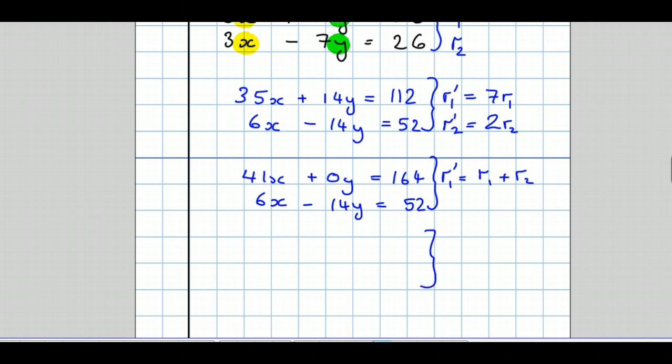Now my next line of working is to find out the value of one of the variables, in this case x. So my new row 1 is going to be the old row 1 divided by 41, and we get x plus 0y divided by 41 is 0y, equals how many times does 41 go into 164? It goes 4 times. And my old row 2 is unchanged, so I don't need to write anything.